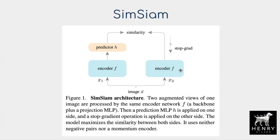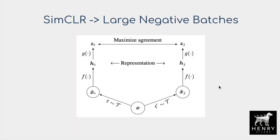There are no negatives in SimSiam in the sense of using other images sampled from the batch. So say you have a bird image, and a rotated bird, and a horizontally flipped bird — you don't need a car or dog as negatives like in many contrastive learning algorithms. SimCLR was a popular paper for self-supervised representation learning. It takes an image X, forms two different augmentations by sampling from a set of augmentations T, passes them through an encoder and projection head, and then maximizes the cosine similarity between the two resulting vectors.